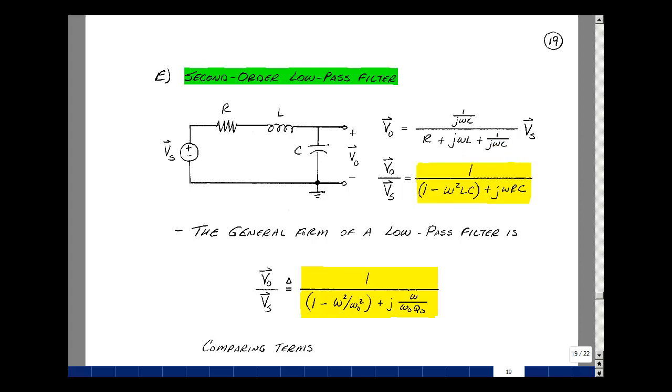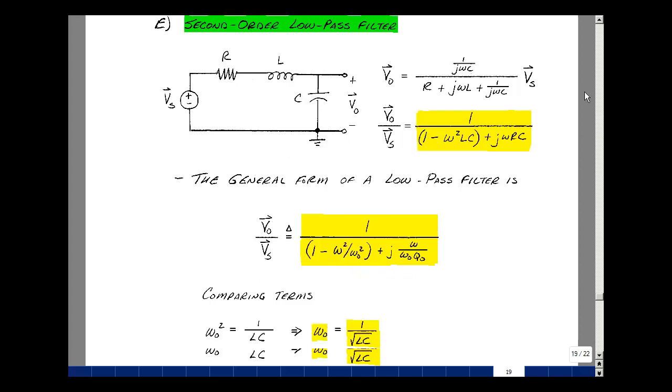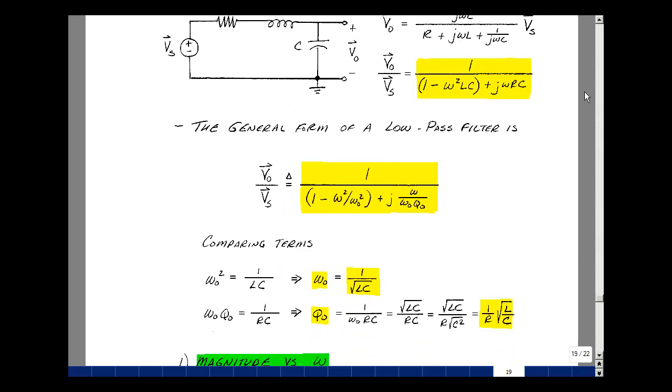Let me define a general form low-pass filter. That's equal to one divided by one minus omega squared divided by omega naught squared plus j omega over omega naught Q naught. For our particular case, let's take a look at the terms and figure out what omega naught and Q naught are. Well, here's the easiest one. Here we've got omega naught squared. That's going to be one over LC. So omega naught is one over square root LC.